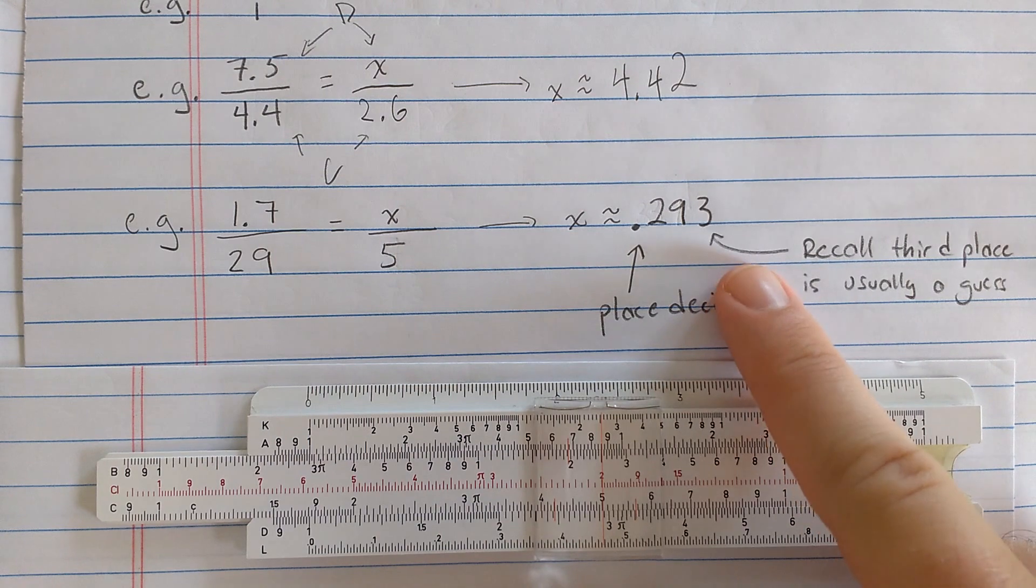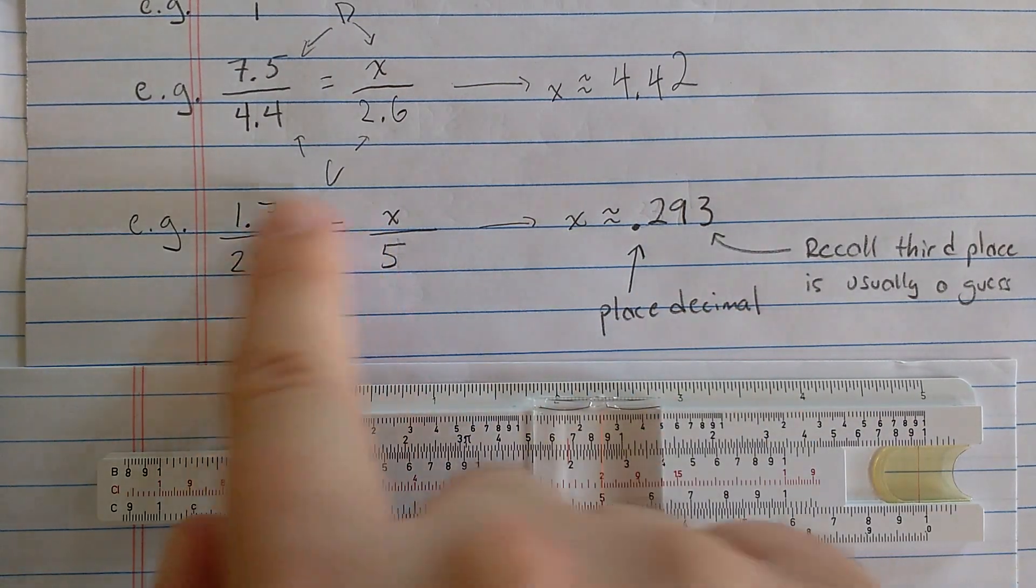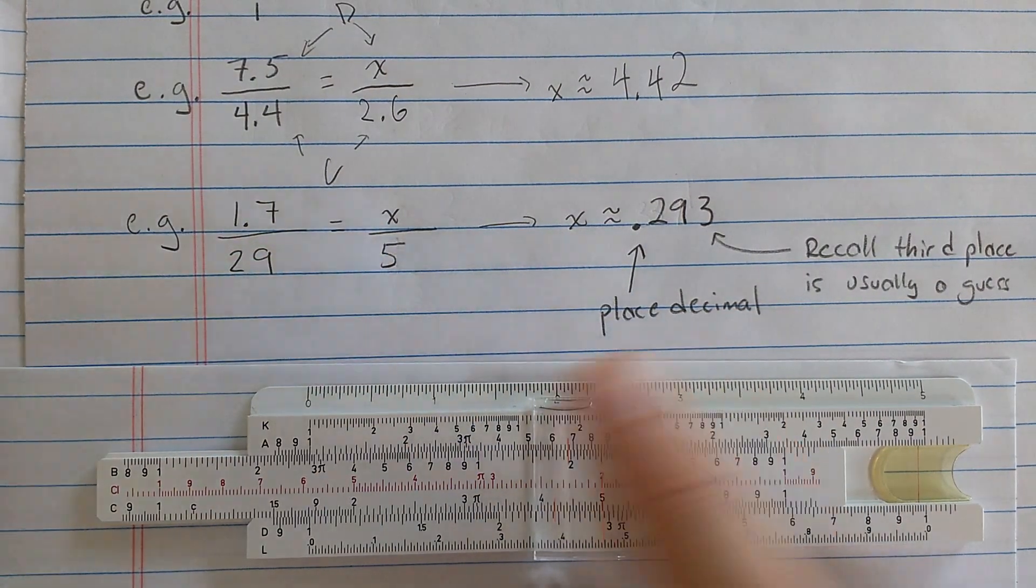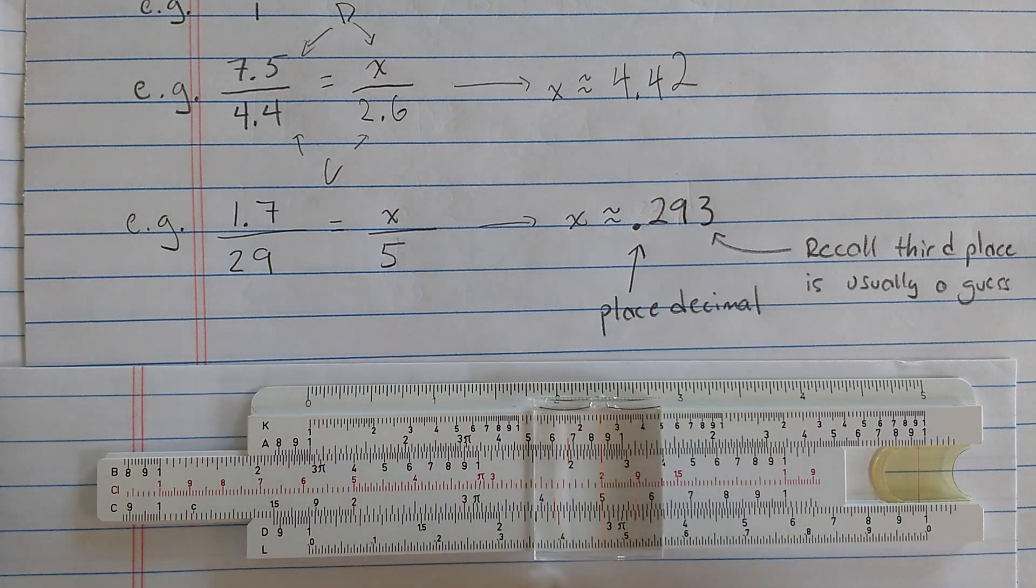Remember, this third digit is usually a guess in that if I have something which is not using the actual numbers on the scale, and not going off scale, then I have to place a decimal point.